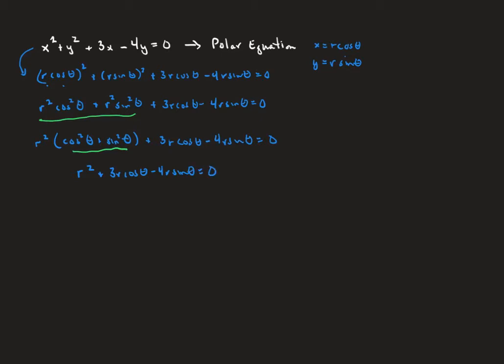We can see we've got all these r's. Moving the non-r-squared terms to the right side gives r squared equals negative three r cosine theta plus four r sine theta. We can then divide through by r, and we get r equals negative three cosine theta plus four sine theta.